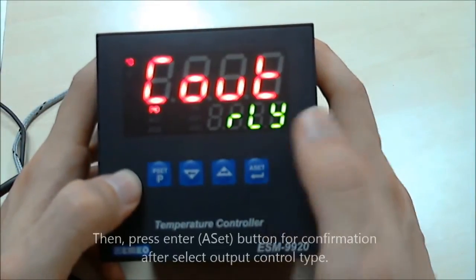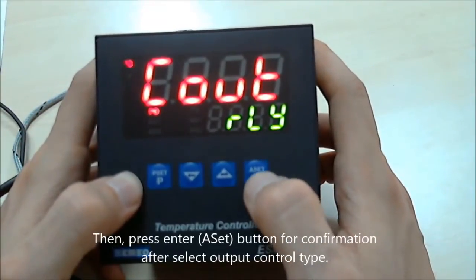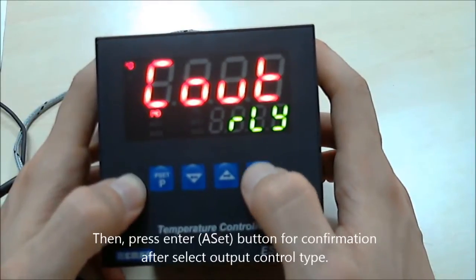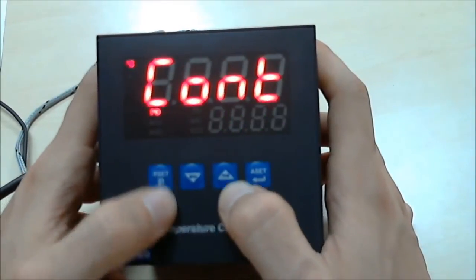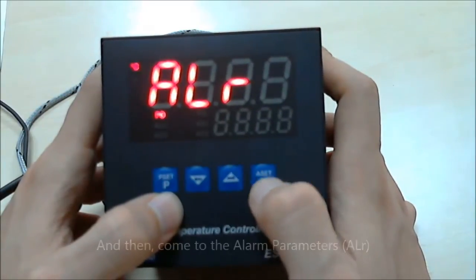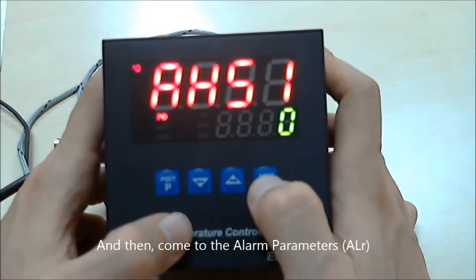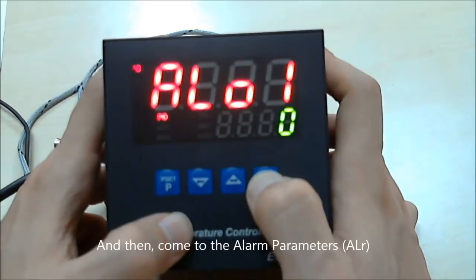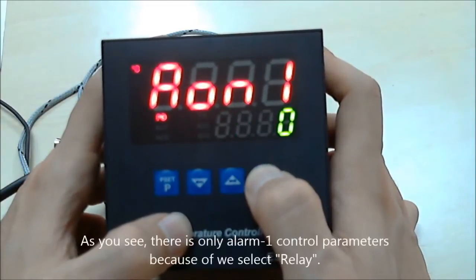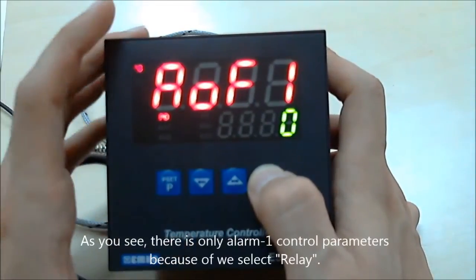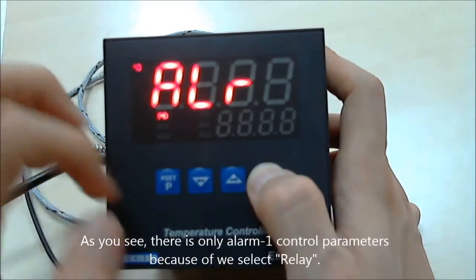So if you select relay output, press enter button for confirmation. When you come to alarm parameters, as you see, there are only alarm 1 controls.